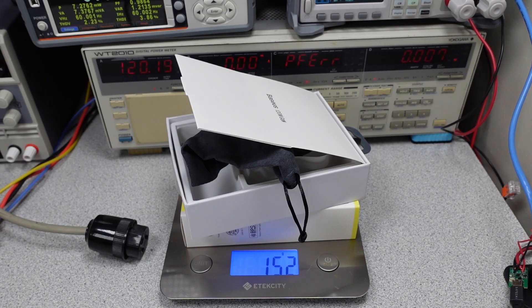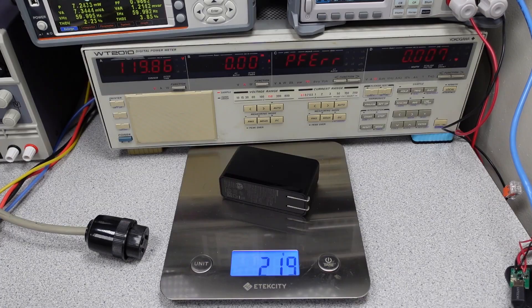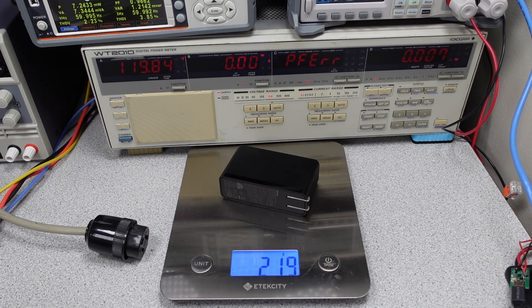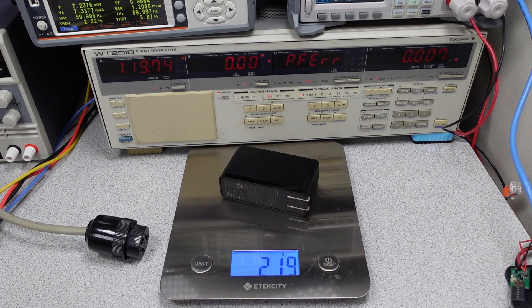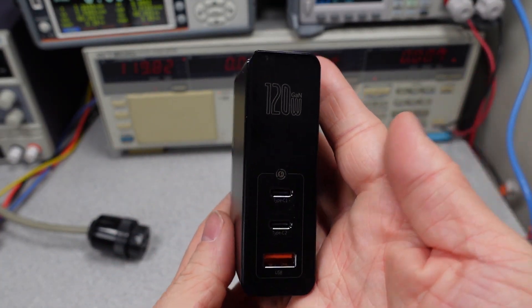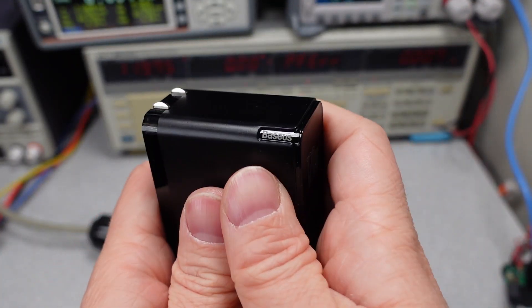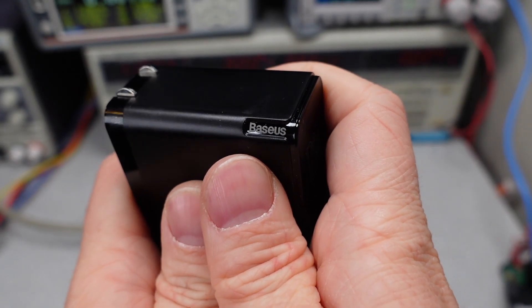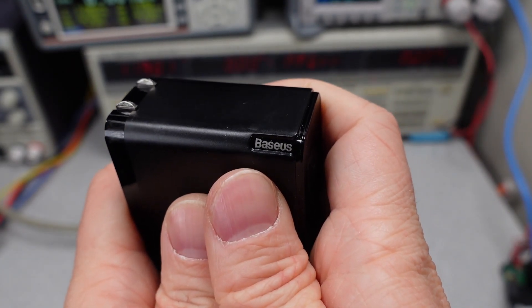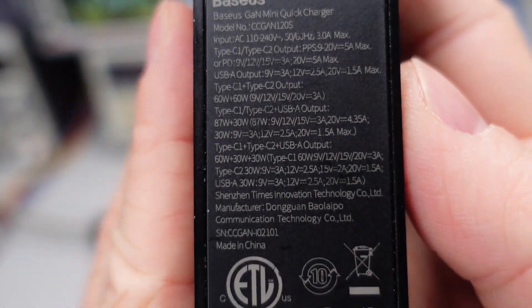The packaging weighs 152 grams. Definitely heavy. The power adapter weighs 219 grams. Not light. Here it is. It's got the 120 watts. They really understated with their logo. It's just got this little thing right here. It says the Baseus brand on it. Let's take a look at some of the specs.